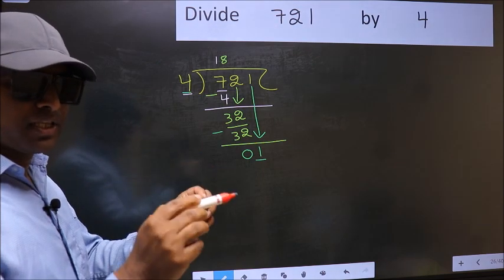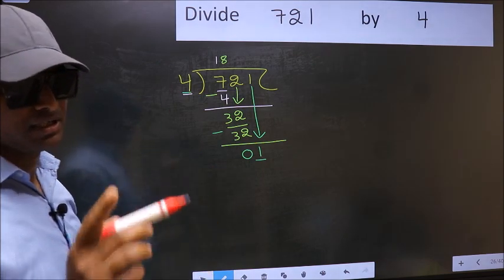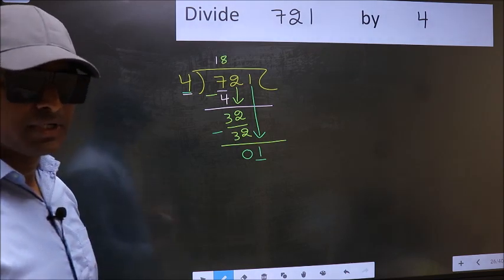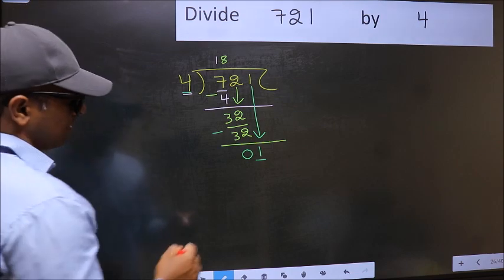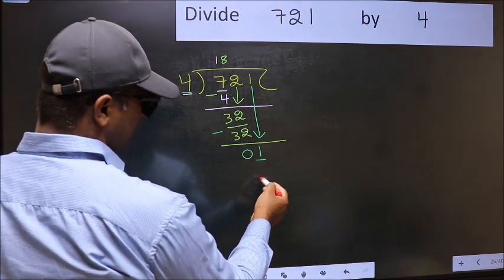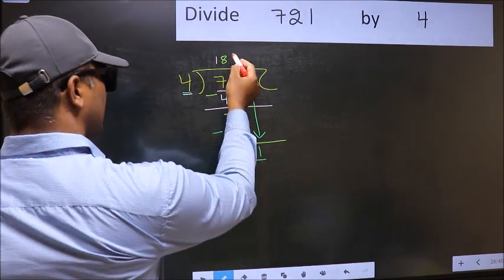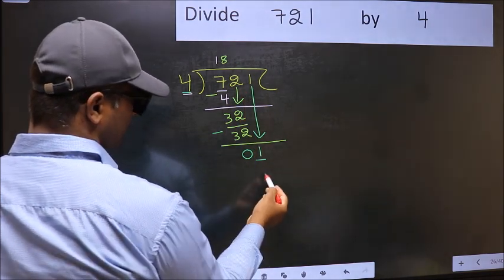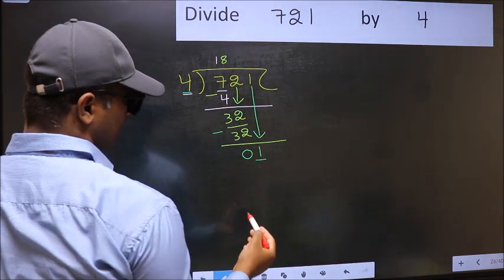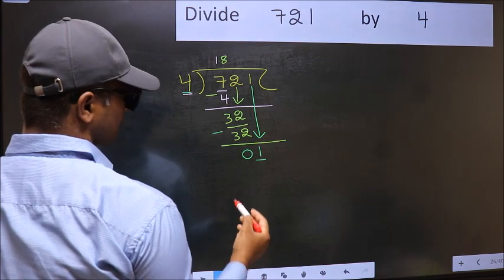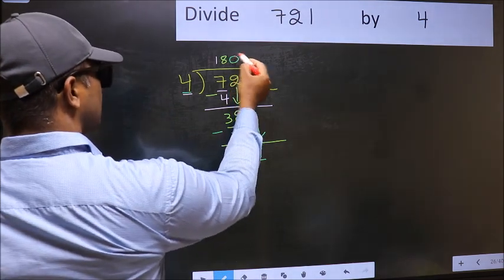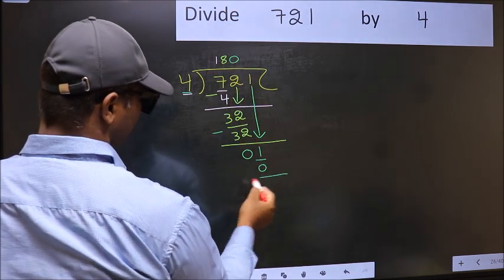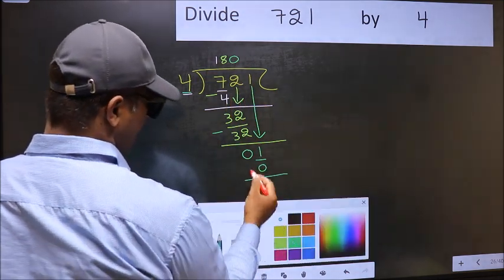Instead, what you should think of doing is: what number should we write here? If I take 1 here, I will get 4, but 4 is larger than 1. So what we should do is we should take 0. So 4 into 0 equals 0. Now you should subtract: 1 minus 0 equals 1.